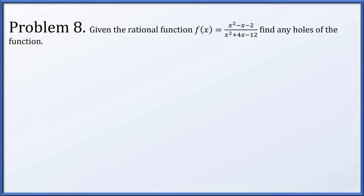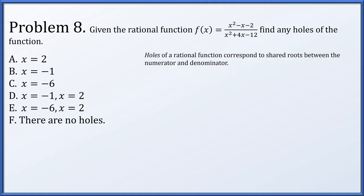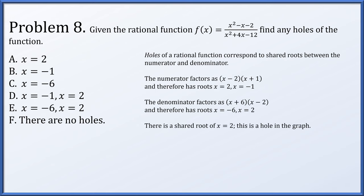In problem 8, suppose f of x equals x squared minus x minus 2 over x squared plus 4x minus 12. Find if this function has any holes. Rational functions have holes when there are shared roots between numerator and denominator. The numerator factors as x minus 2 times x plus 1, with roots x equals 2 and x equals minus 1. The denominator factors as x plus 6 times x minus 2, with roots negative 6 and 2. There's a shared factor of x minus 2, giving us a hole in the graph at x equals 2.